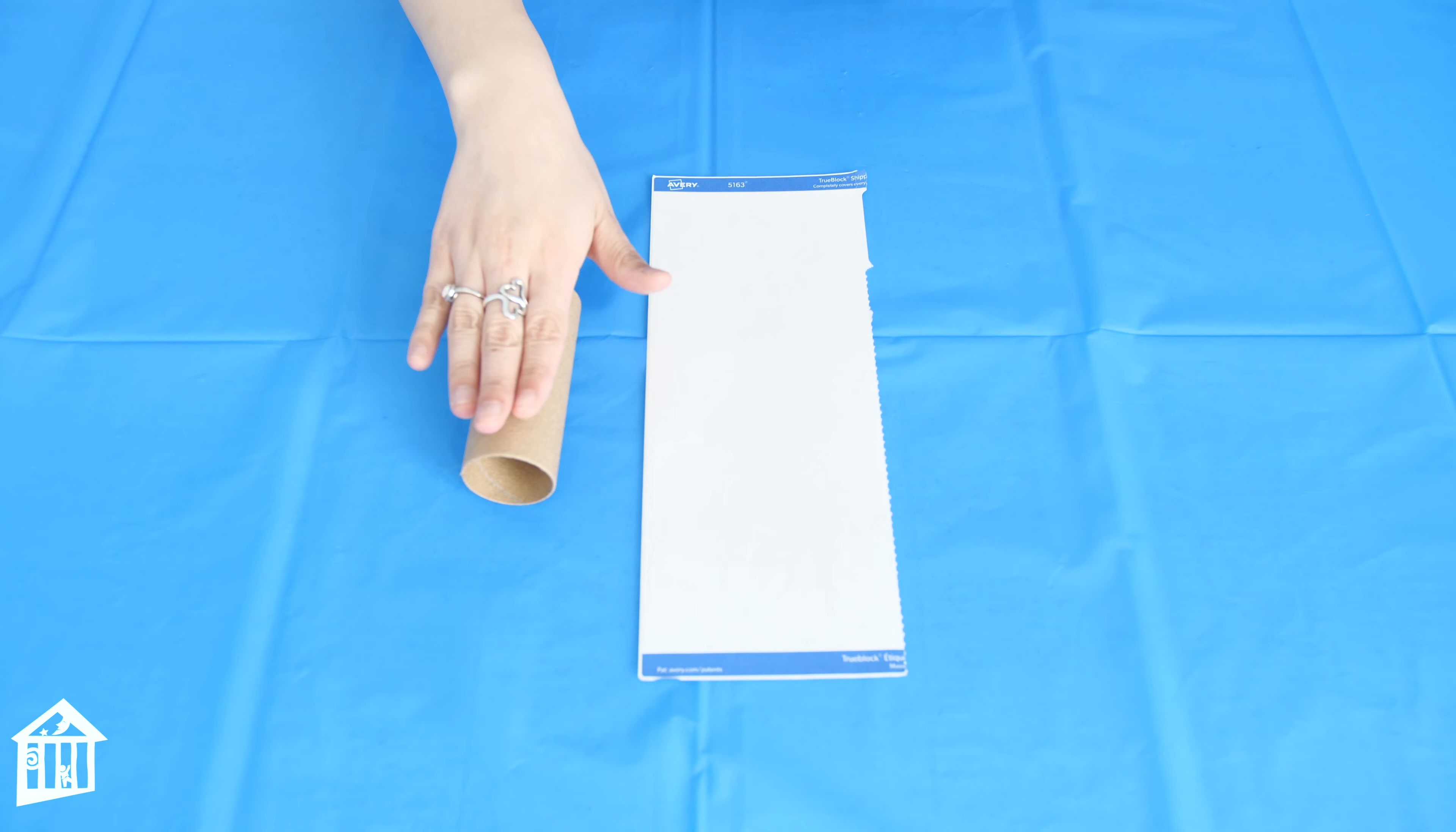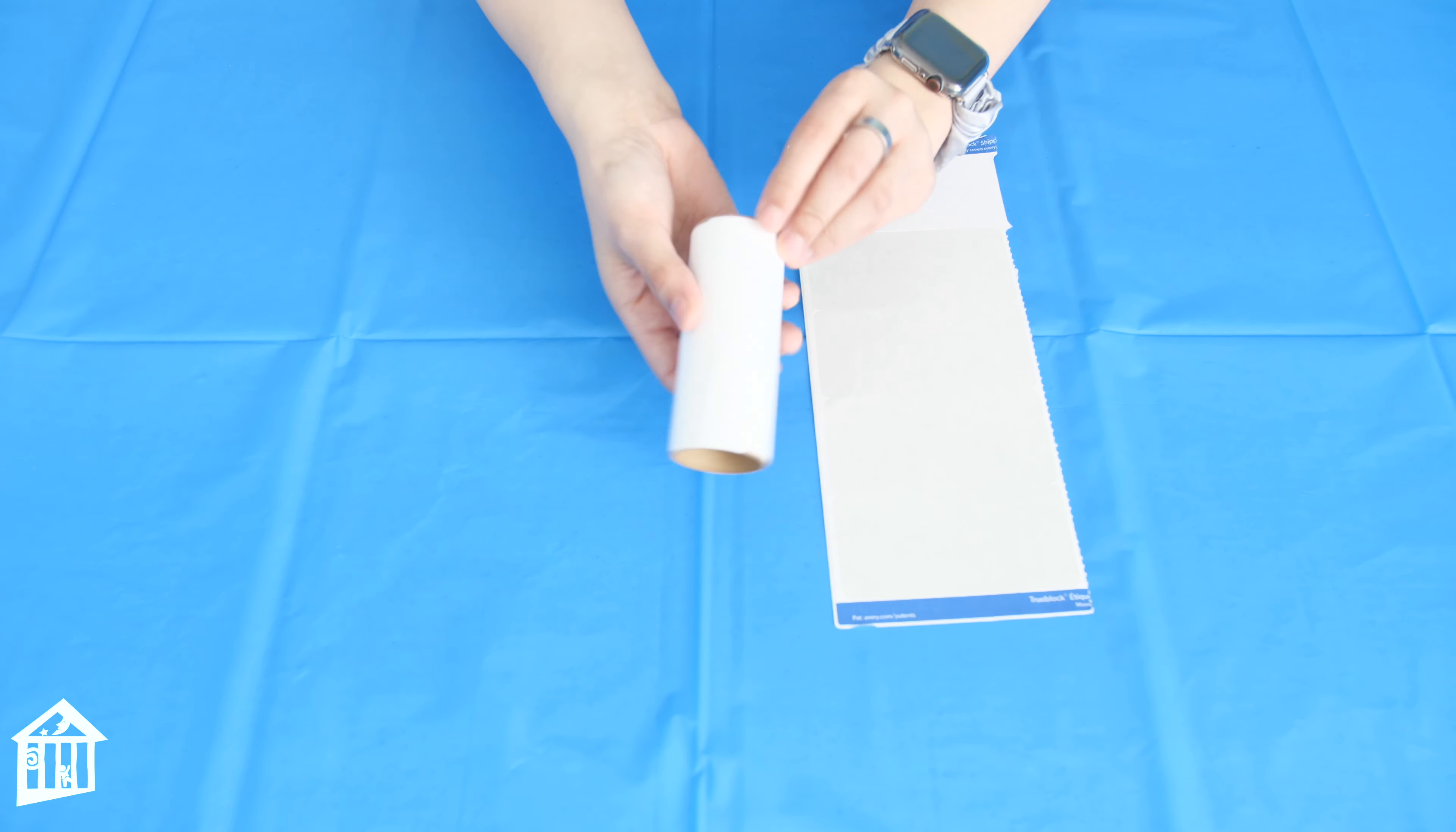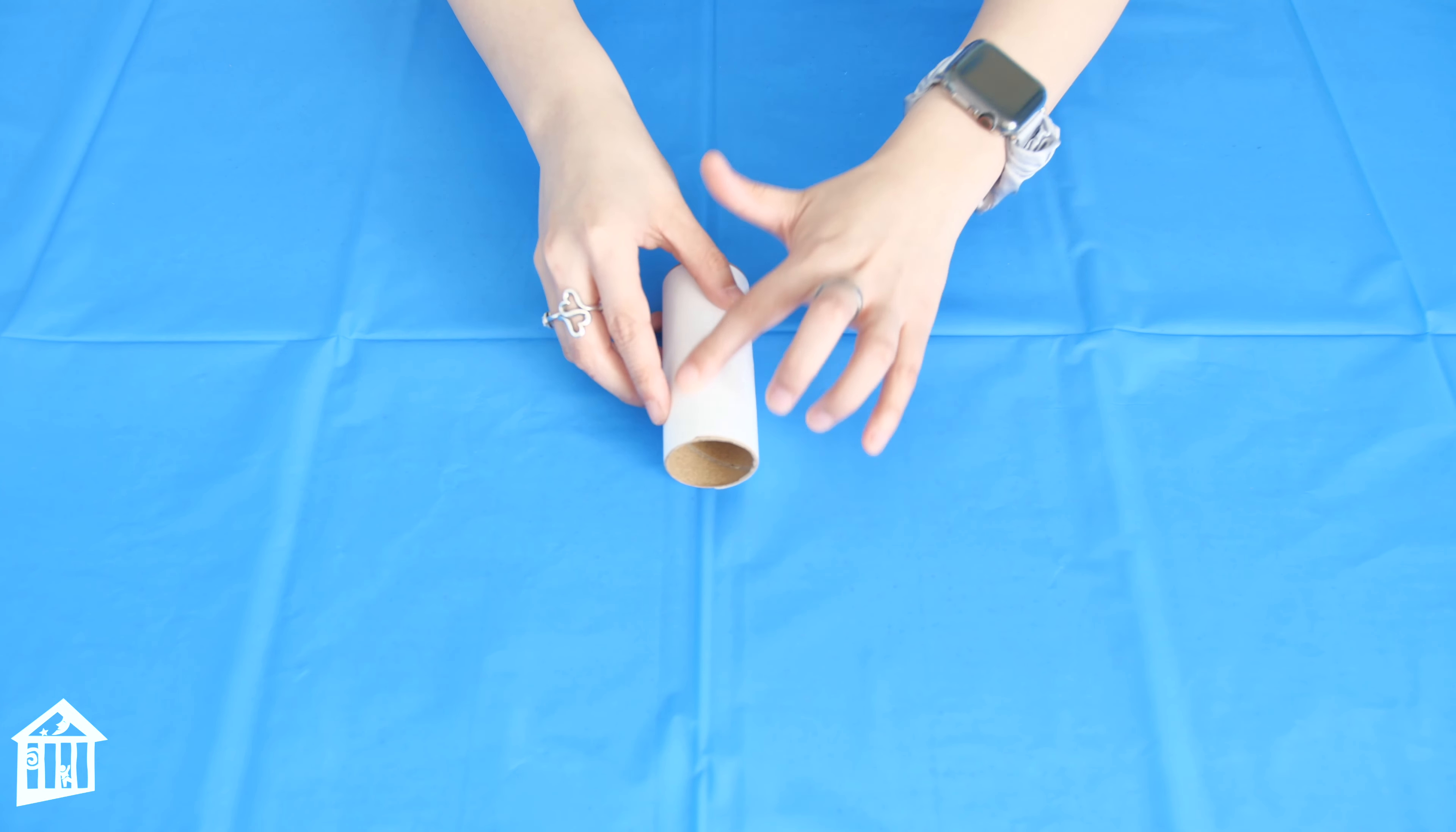First we're gonna grab our toilet paper roll and our white stickers or white piece of paper to create the body of our snowman. Okay, all done.